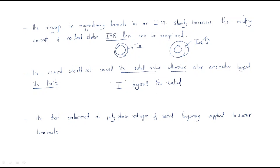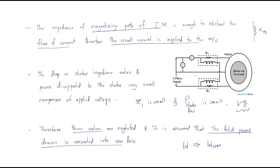The test is performed at varying voltages and rated frequency applied to the stator terminals — that means we apply different voltages and frequencies to the stator terminals. In the diagram, three-phase supply is applied to the stator. The voltage between two phases gives the line voltage, and to measure power we use two wattmeters W1 and W2. The combination of W1 plus W2 gives the total input power applied to the three-phase induction motor.